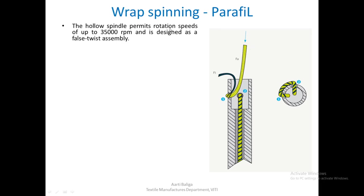The hollow spindle rotates at around 35,000 rpm and is actually behaving like a false twist assembly. Looking at the top view of the hollow spindle, the fibre strand is made to immediately come out from the left and take a wrap around the spindle, then re-enter at the top.